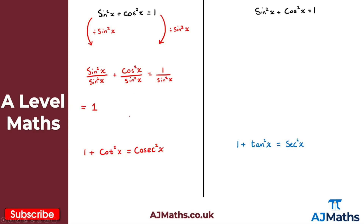Then cos²x over sin²x: since sin²x over cos²x would be tan²x, the reciprocal of that is cot²x. And finally 1 over sin²x is one of our reciprocal trig functions — that's cosec²x. So we've proved 1 plus cot²x is equal to cosec²x. That's our first proof.